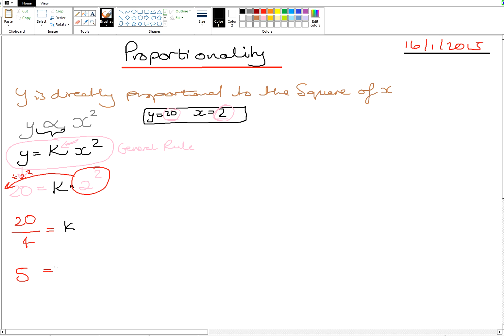So we have now established the value of K. Once we establish the value of K, the general rule becomes specific because we know the K value. So we can replace it now. We can say Y is equal to, the K is being replaced by a 5, and the X squared stays as X squared. We put a box around that Y is equal to 5X squared.